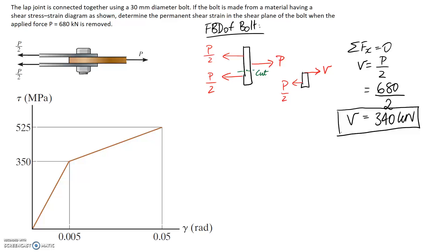Alright, so the next thing I'm going to work on is finding out what the shear stress is through the bolt, because we're going to be able to relate that then to our stress strain diagram. So tau is equal to V divided by A, and we've just worked out V to be 340 kN. I'm going to put it into newtons so our units work out more nicely, and the cross-sectional area is going to be based on the 30 millimeter diameter. So we find out that we have a shear stress of 481 megapascals through our material.